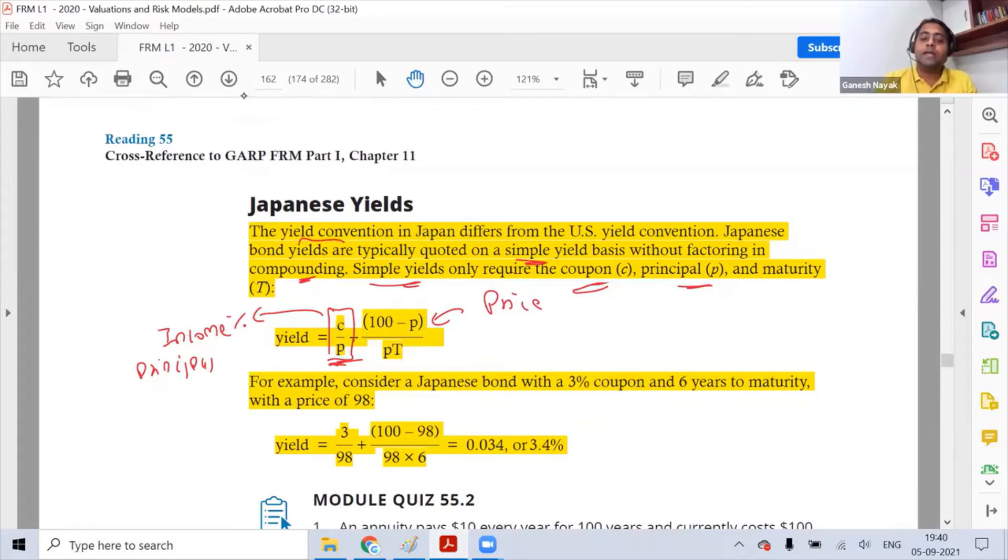So what they are trying to identify is the impact or the way the price is calculated, the price change. If you look at this example, there is a bond which is having a 3% coupon, it's a 6-year bond, and currently priced at 98. Can you guys see? If you calculate this, what is the return? What is the calculation for this? 3 divided by 98, give me the answer.